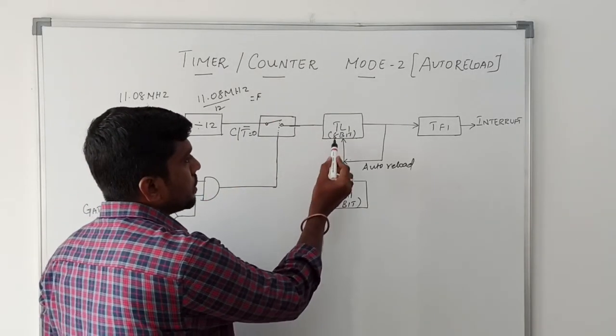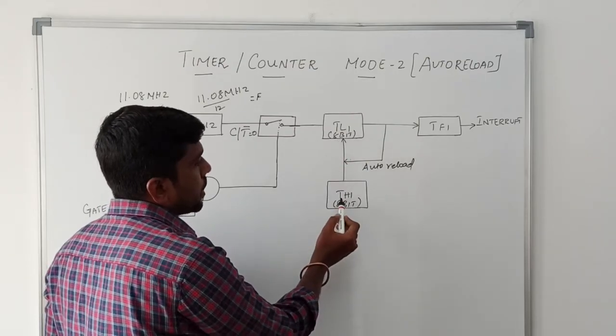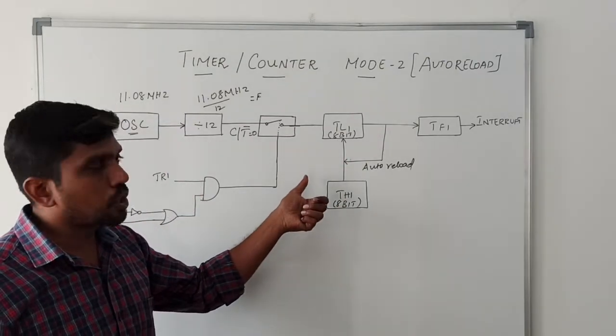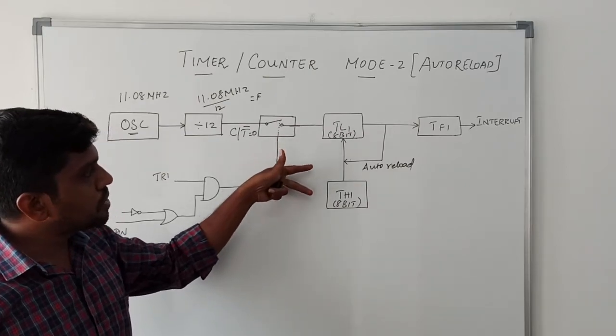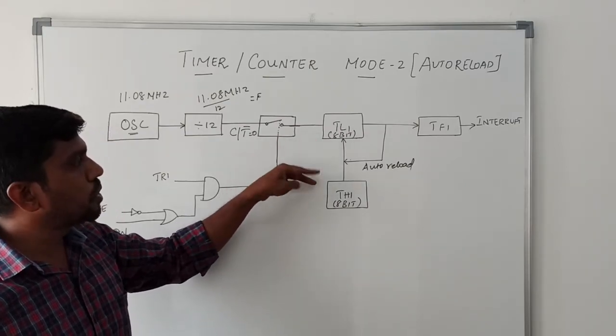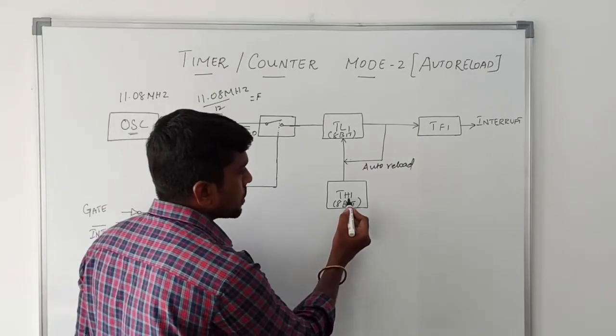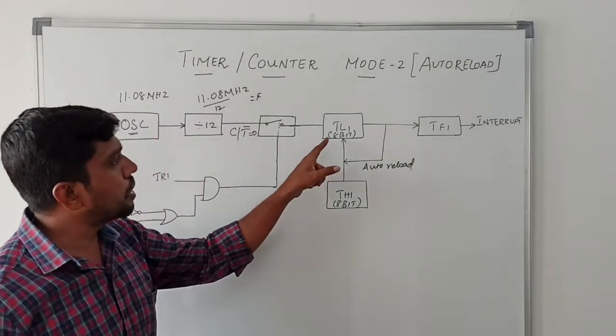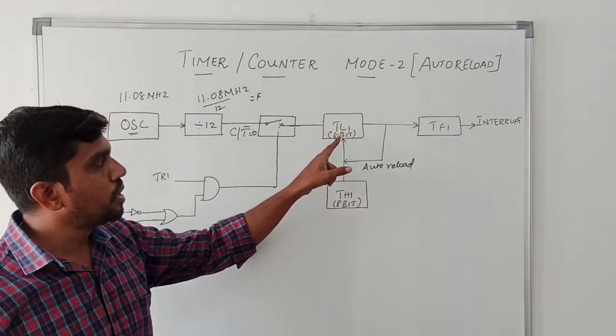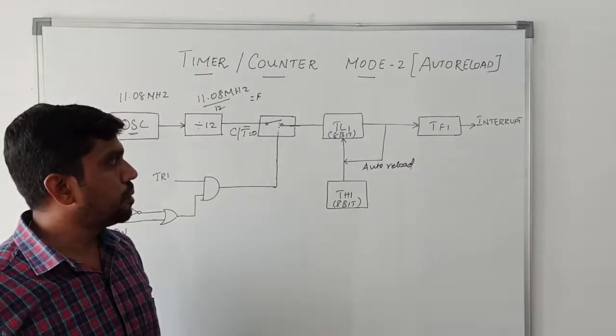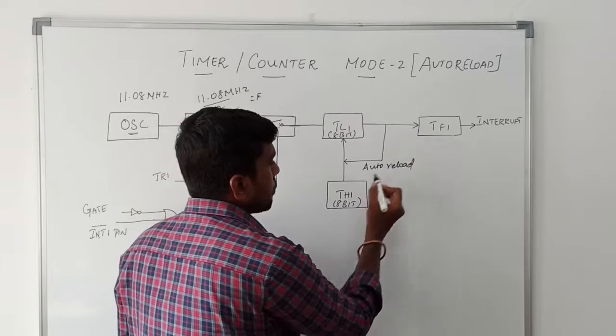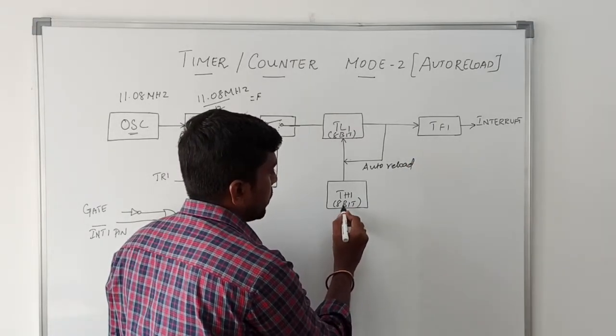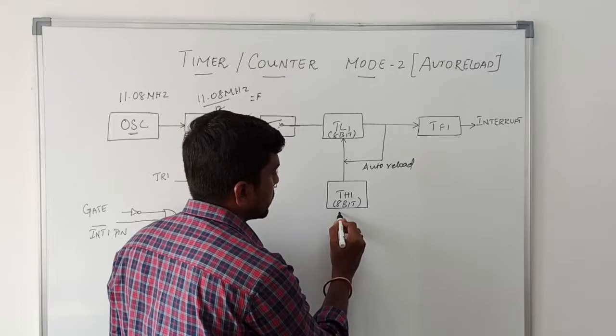Here the TL1 and TH1 is the timer register one. It's a 16-bit register. This register is split into two blocks, one namely called TH1, which is an 8-bit register, and another one namely called TL1, which is also an 8-bit register. Here first you set the initial value of the timer one register.